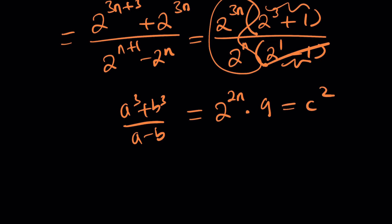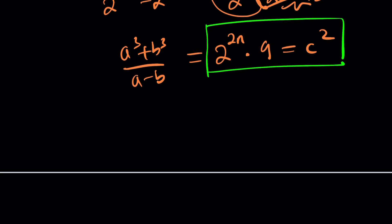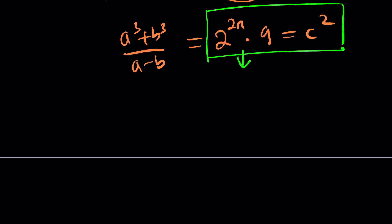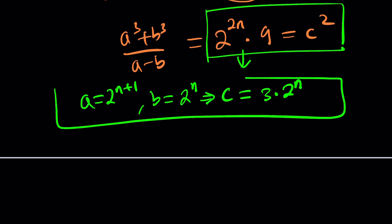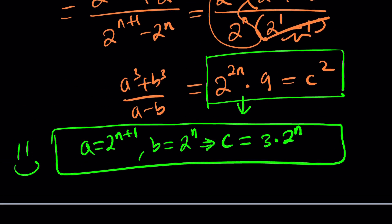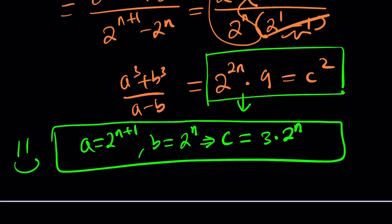Beautiful. You know why? Because this is a perfect square. It's just perfect. Everything is awesome. So from here, c becomes 3 times 2 to the power n. So if a is equal to 2 to the power n plus 1 and b is equal to 2 to the power n, then c becomes this. Therefore, we got a triple that works all the time as long as n is an integer. Does that work for negative integers? That's for you to check out.